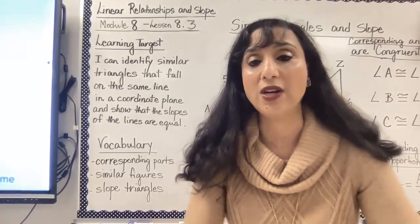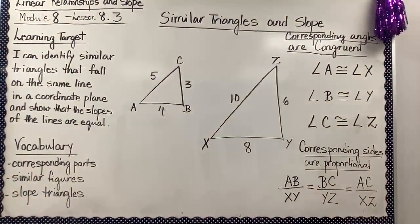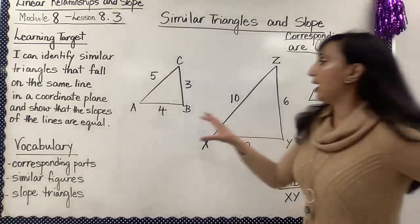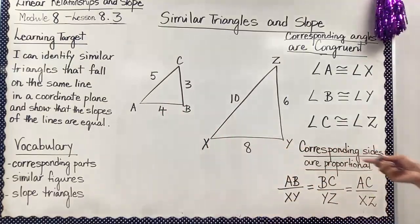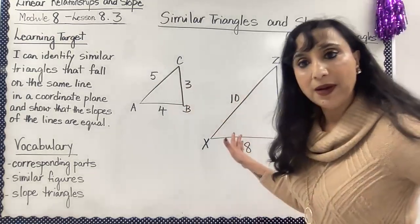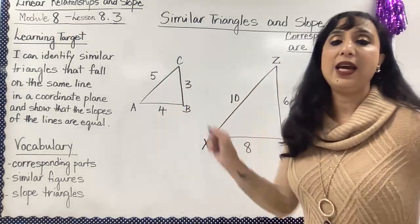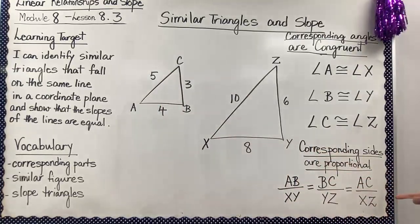I have drawn two triangles on the board — triangle ABC and triangle XYZ. When figures have the same shape but not necessarily the same size, they are called similar figures. So here we have a smaller size and a bigger size, but they have the same shape — these are called similar figures.